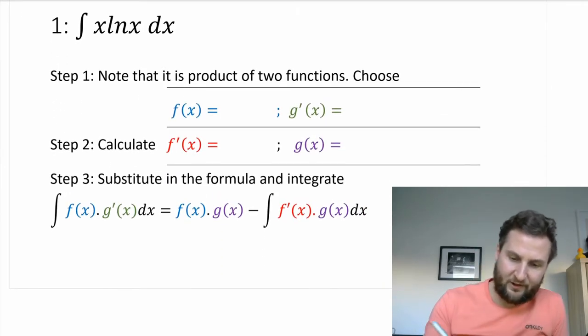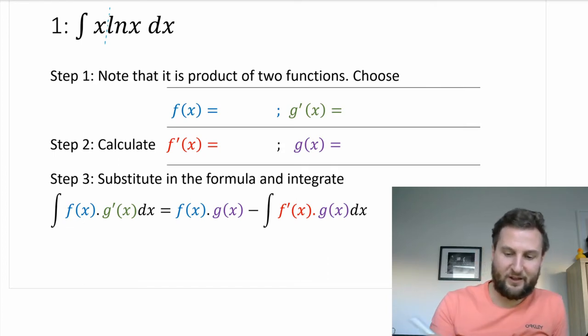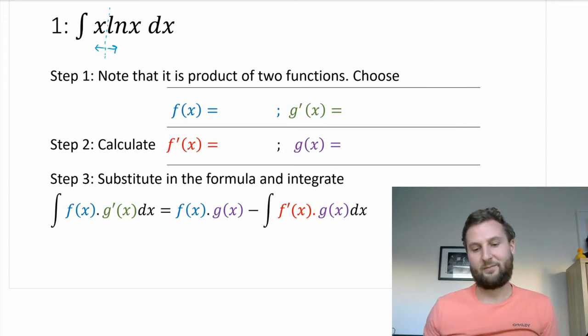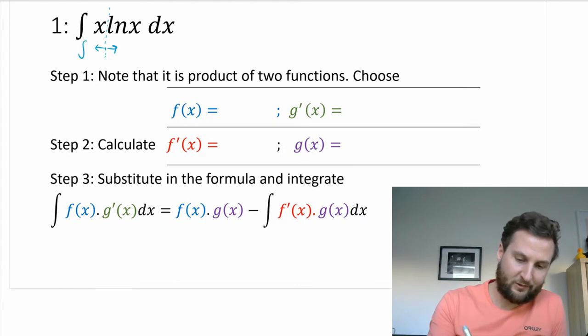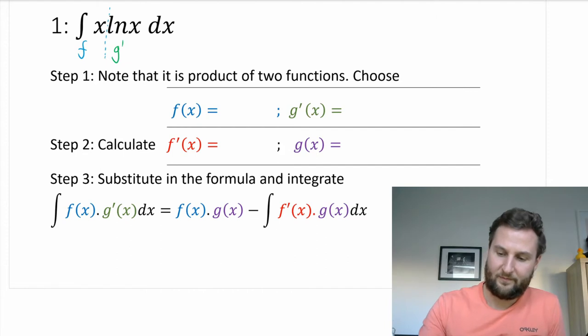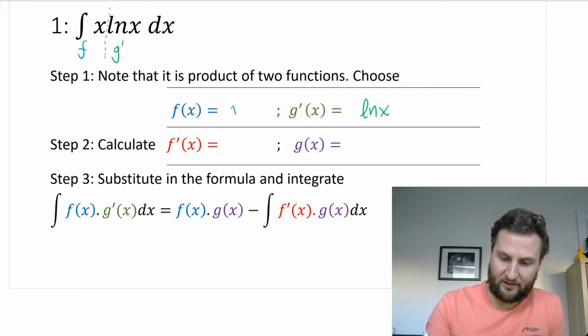So this first one here x times ln x. We don't really have much choice in how we split the function up, so we split it down here between the x and the ln x and we get a choice now of making one f and one g prime. So one side we're going to make f and the other side we're going to make g prime. We're not really given any hints as to what to do here. So let's just go ahead and go in order.